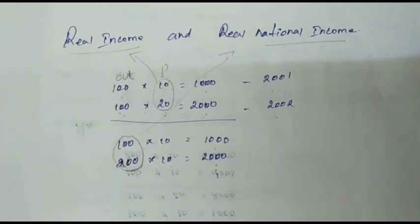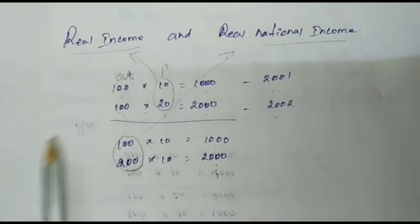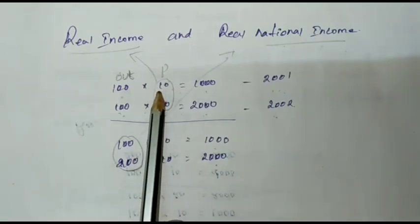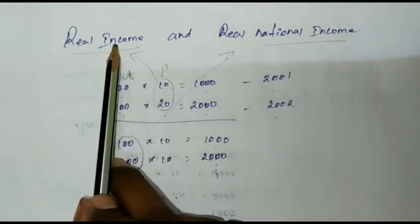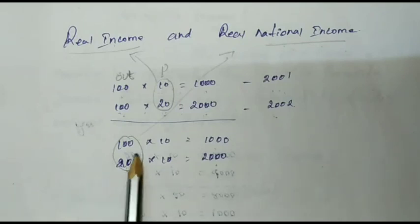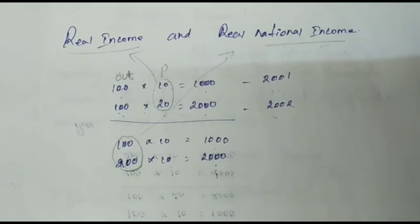This deals with the income of a single person. That is the income — our salary. The price increases, that is called real income. National income depends on how many outputs are produced — that is the real national income. Students, very simple. Put your doubts in the comment section. Thank you very much.